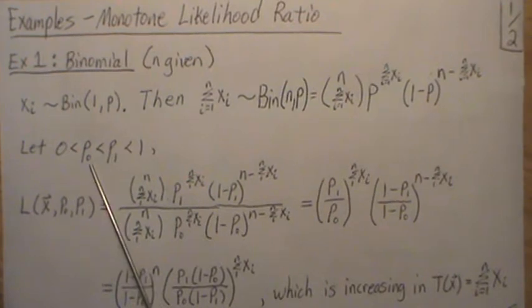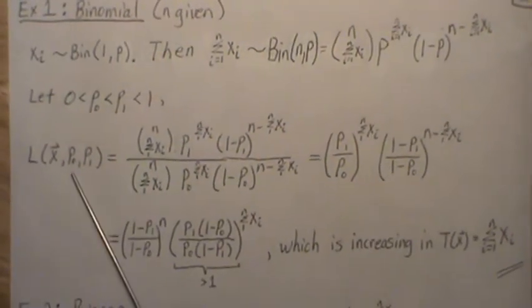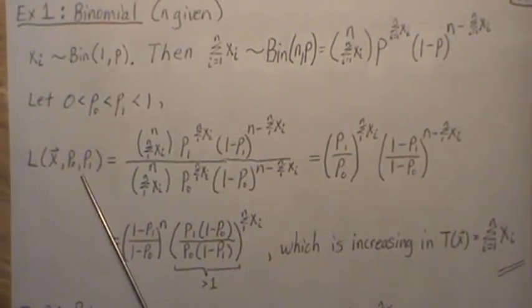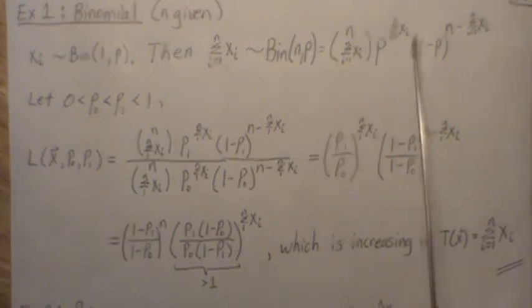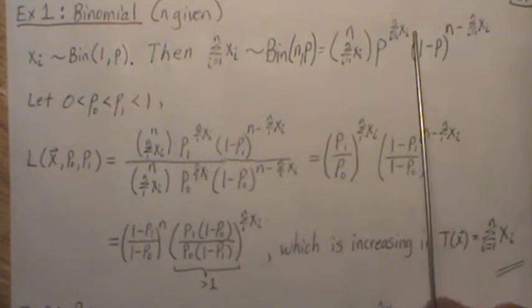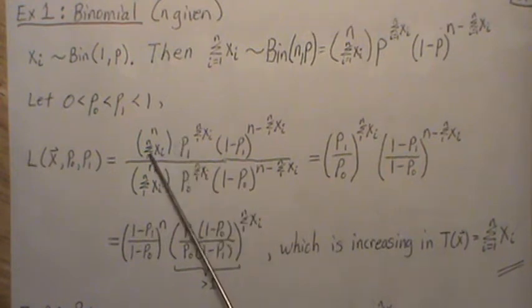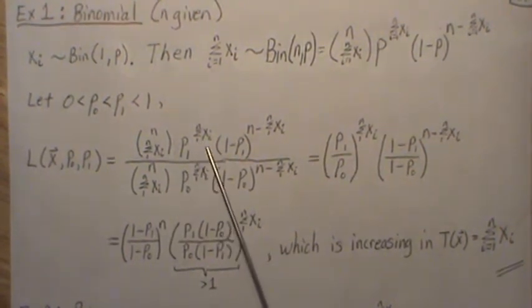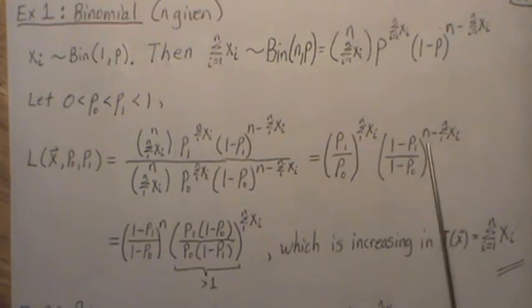So if we assume that p1 is greater than p0 and we create the likelihood ratio, then the top part is this but we plug in p1 everywhere, and the bottom part is again this but we plug in p0. Now things can cancel, and we have the same exponent here so we can combine them.